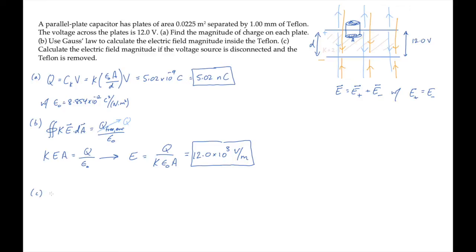In part C, we're asked to find the electric field if the voltage source is disconnected and the Teflon is removed. Removing the Teflon changes the dielectric constant to 1, and because the voltage source has been removed, no charge can enter or leave the capacitor, so Q is the same as it was before.